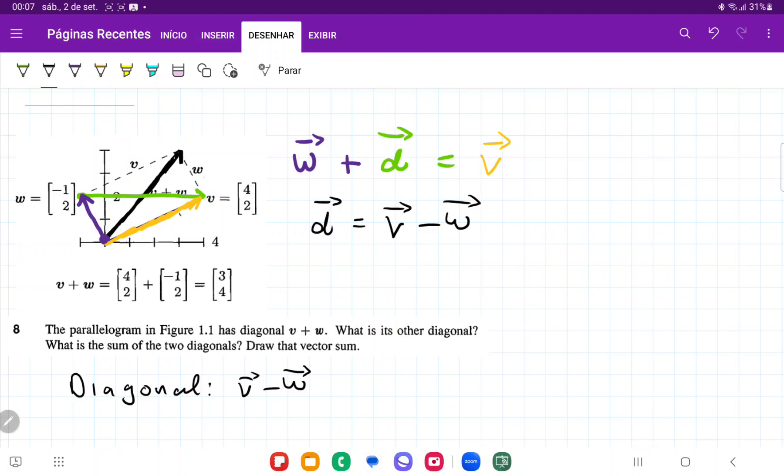And then it wants us to add V plus W and V minus W, which are the two diagonals. So the sum is going to be the diagonal that we found, plus the other diagonal here, which is plus V plus W. And so that is going to give us two V.